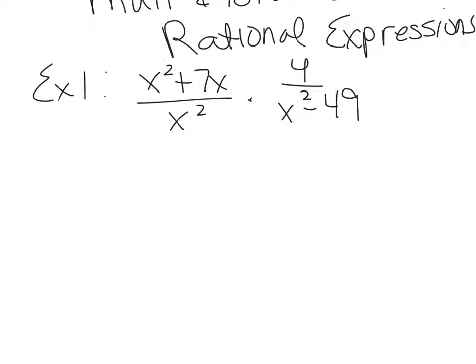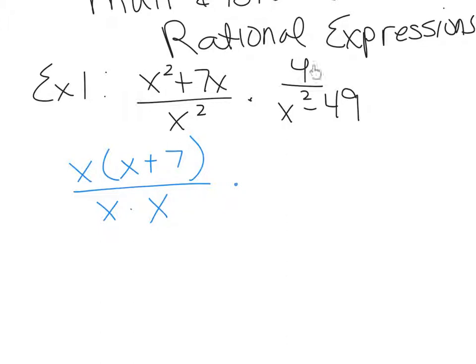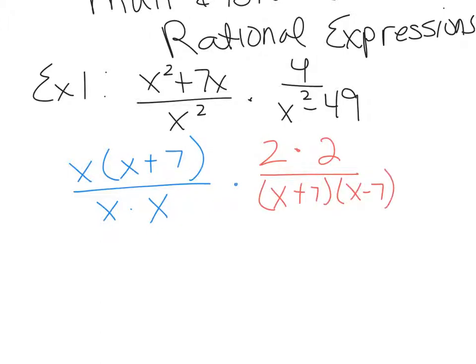In the numerator here, there's a GCF of x, so I'm going to take out an x, leaving me with x plus 7. The denominator is just x squared. When you have a monomial, I would separate the factors — x squared is x times x — because sometimes they will reduce individually. Over here on the right, the 4 is a monomial, so I'm going to break it down to its prime factors: 2 times 2. The denominator is the difference of squares, so I'm going to write that as x plus 7, x minus 7.